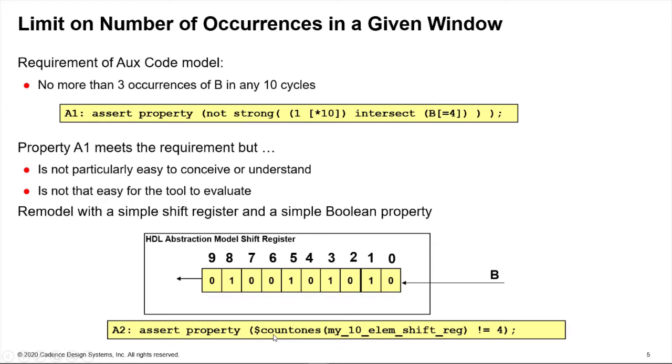And all we need to say then is assert the property that $countones, which is a built-in SystemVerilog function, will count how many ones are in the shift register. So I'm saying that should never equal four. That's all I need to say. I don't need to understand what intersect does or what within does or what not does or what strong does. Very simple to implement, very easy for the tool to process.